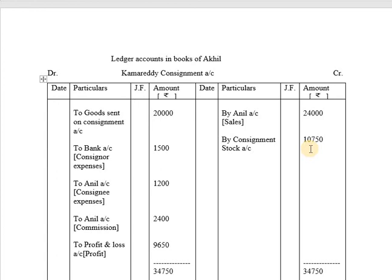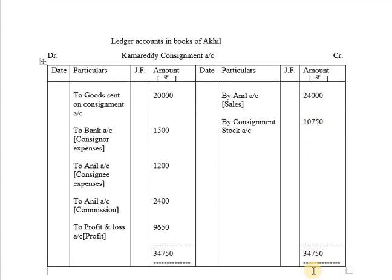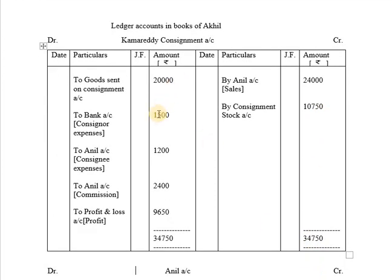Now we will balance the Kama Reddy Consignment Account. The total on the credit side is 24,000 + 10,750 = 34,750. The total on the debit side is 20,000 + 1,500 + 1,200 + 2,400 = 25,100. Subtracting 25,100 from 34,750 gives a profit of Rs. 9,650, which is recorded as 'To Profit and Loss Account — Profit 9,650'.